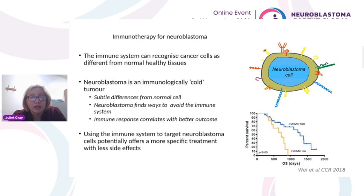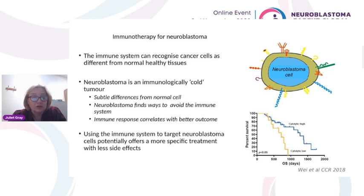We know the immune system can recognize tumors, but the immune response it makes to cancers is generally not very effective. Partly because the tumor is not very different from normal tissues, and also because most tumors, including neuroblastoma, are quite clever at finding ways to avoid the immune system. However, when immune responses are found in tumors — when we can see immune cells in neuroblastoma histology — that correlates with better prognosis and outcome. The idea of immunotherapy is to use this specificity to manipulate the immune response to make it effective against cancer.